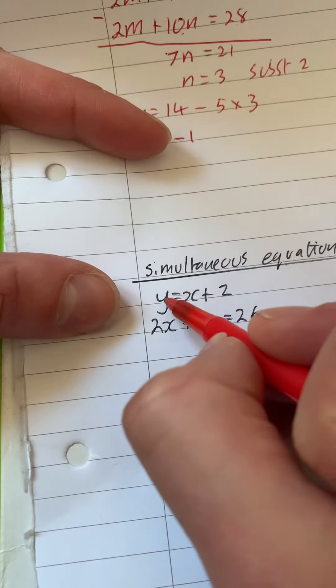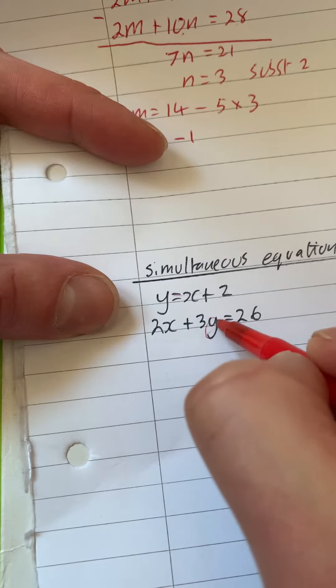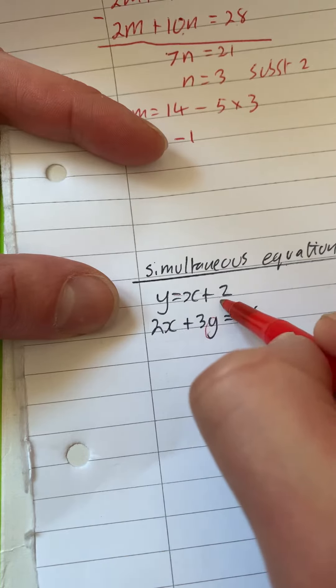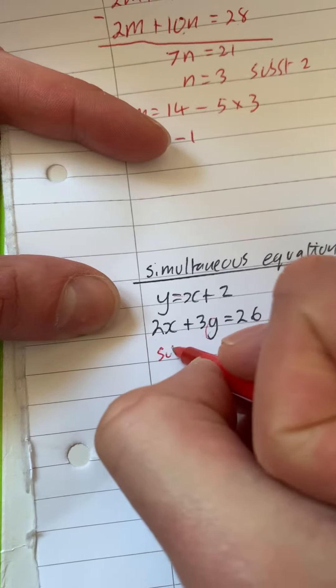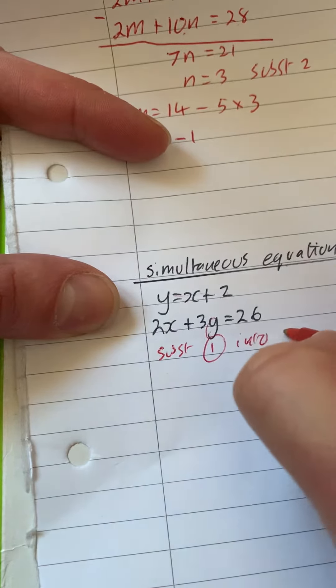So what we can do is it says y is equal to x plus 2. That means that this y here is x plus 2. So we're doing what we call substitution. We're going to substitute this, so we're substituting 1 into 2.